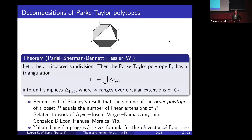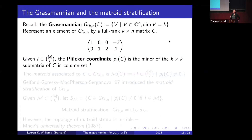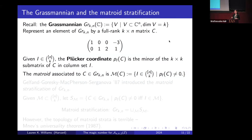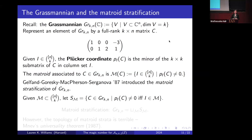To tell you about the amplituhedron, let me review notation for the Grassmannian G(k,n) and Plücker coordinates. Associated to any full rank k-by-n matrix C, we have a matroid: the set of all k-element subsets of {1,...,n} where the corresponding Plücker coordinate is nonzero. Back in 1987, Gel'fand, Goresky, MacPherson, and Serganova introduced the matroid stratification of the Grassmannian — decomposing it into strata defined by which Plücker coordinates are nonzero.